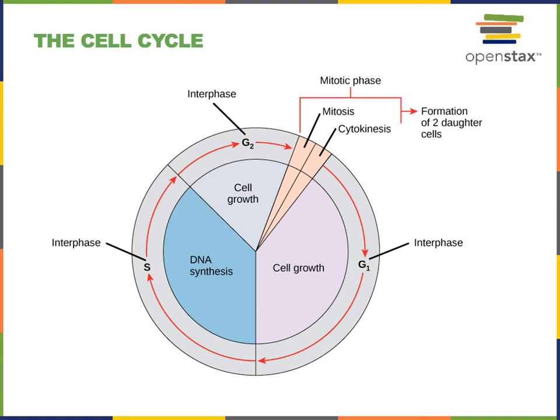The third phase of the cell cycle is known as the second growth phase, or the G2 phase. The G2 phase is a phase when the cell is accumulating nutrients and checking to make sure that DNA replication went without any major errors. After the DNA has been replicated and there are no major problems, the cell needs to make sure it has enough nutrients to prepare for dividing and producing two new daughter cells.